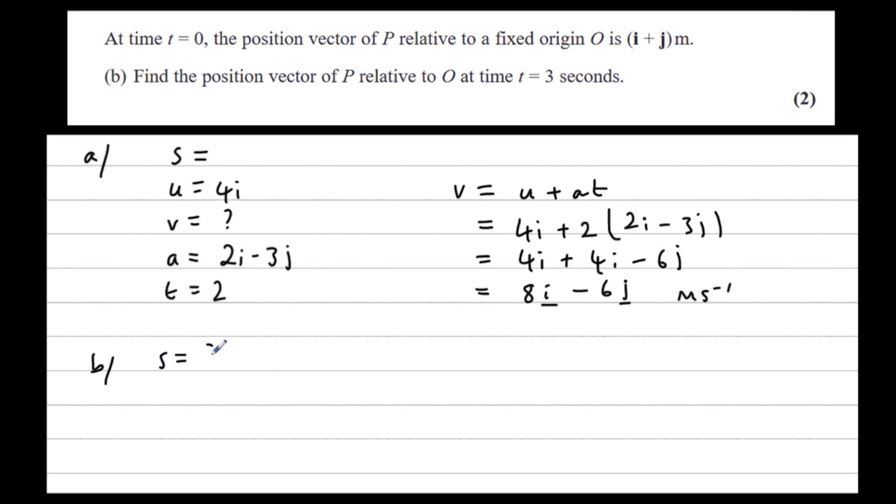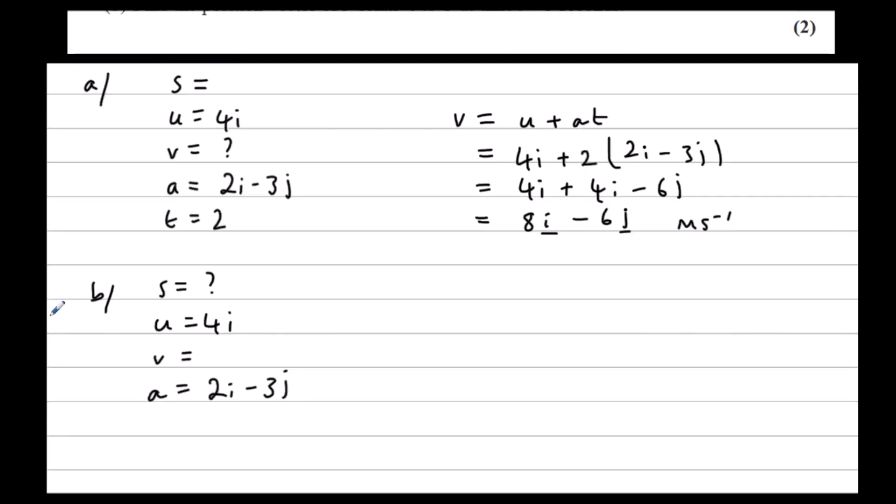So this time we're working out the displacement. We know U was 4i. We don't know the velocity at time equals 3. We know the acceleration is still 2i minus 3j. And now time is equal to 3.